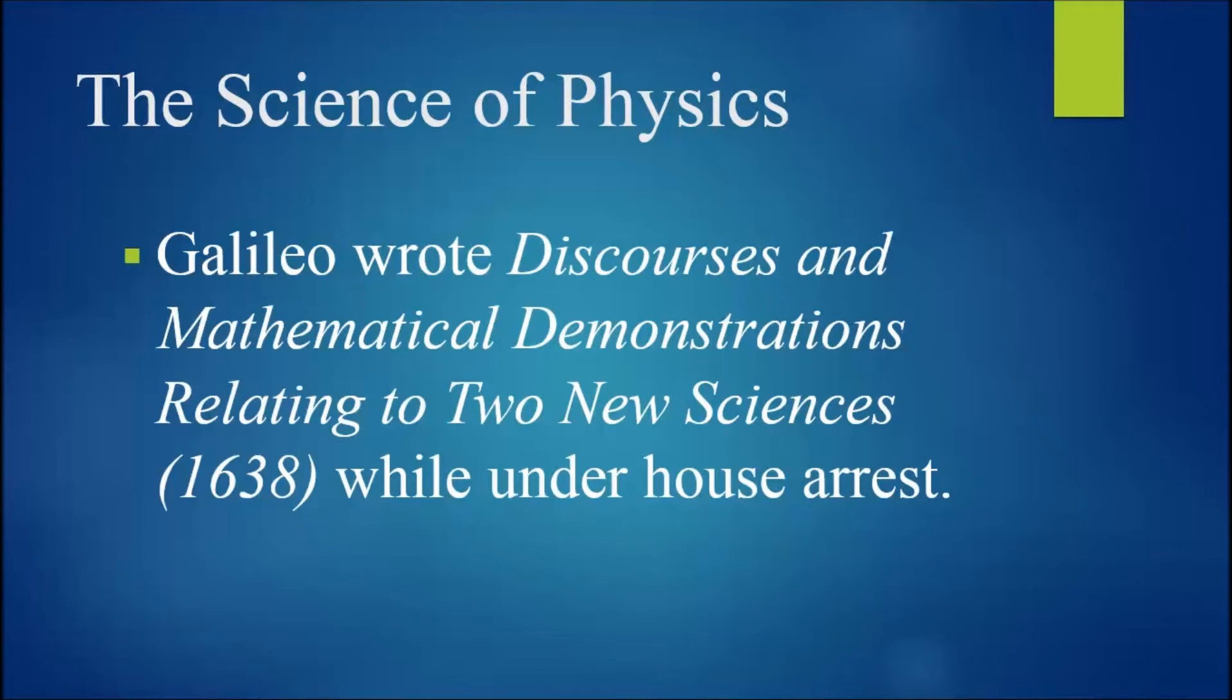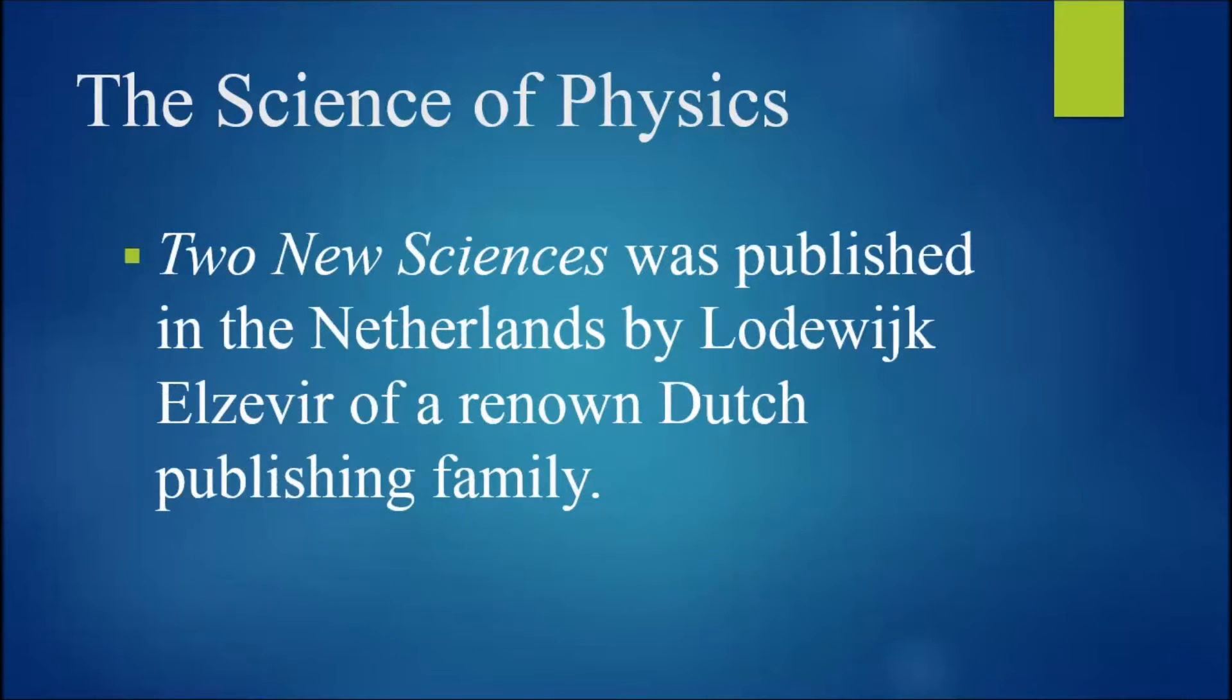It was while he was under house arrest that Galileo wrote his Discourses and Mathematical Demonstrations relating to Two New Sciences, which took the form of a dialogue between three main characters. A debt of gratitude is owed to the Netherlands, where the church had little power, and in particular to Ludwig Elzevert, of the renowned Dutch publishing family, who published Two New Sciences.